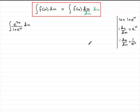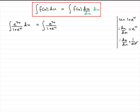So what we've got then is the integral of e to the 3x all over 1 plus e to the x, and in place of dx we're changing it to dx over du, which is 1 over e to the x, and then du.